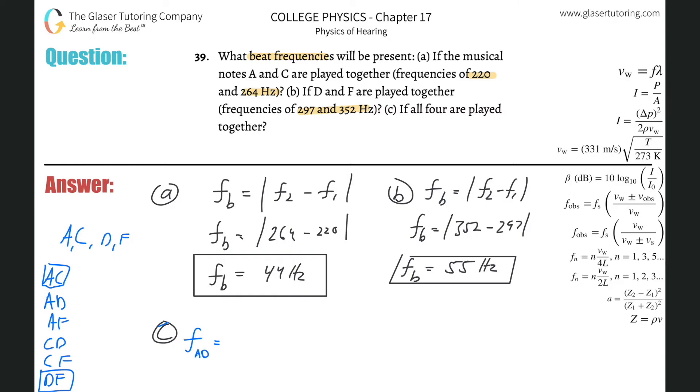Then AF is 220 and 352, so 352 minus 220 equals 132 Hz. Then CD is 264 and 297, so 297 minus 264 equals 33 Hz. These are all in hertz, by the way.